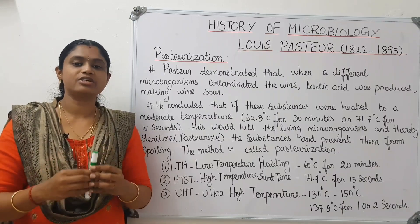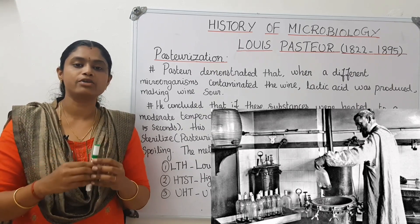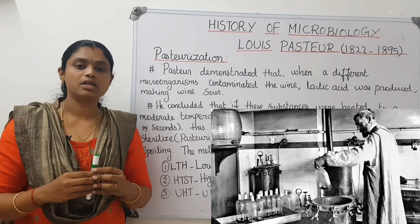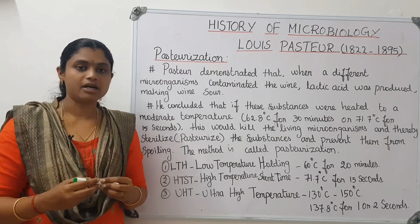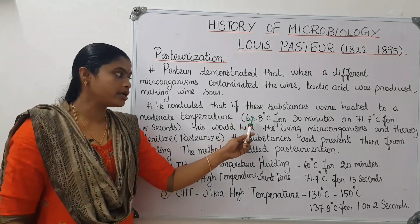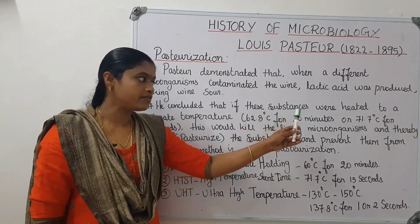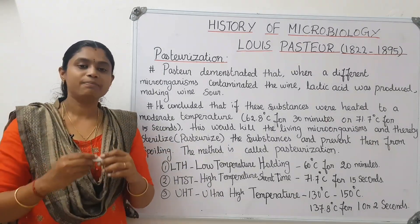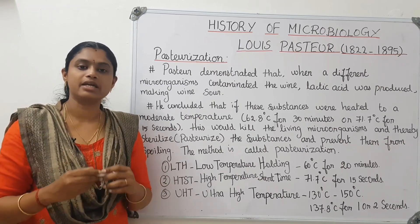The last contribution is pasteurization. The process involves using heat to kill microorganisms. Applying heat — such as 63 degrees Celsius for 30 minutes or 71.7 degrees Celsius for 15 seconds — kills microorganisms and sterilizes the substance. This is pasteurization, and it prevents spoilage.